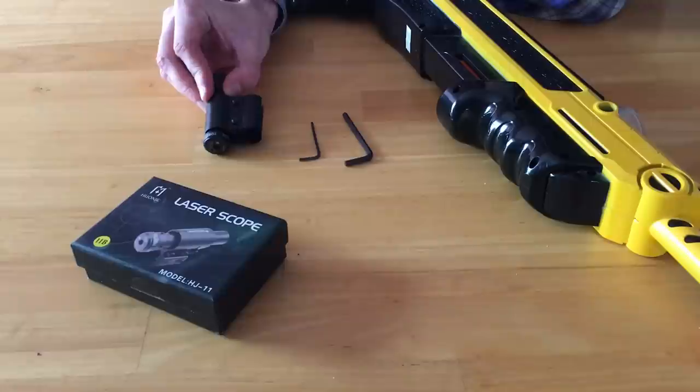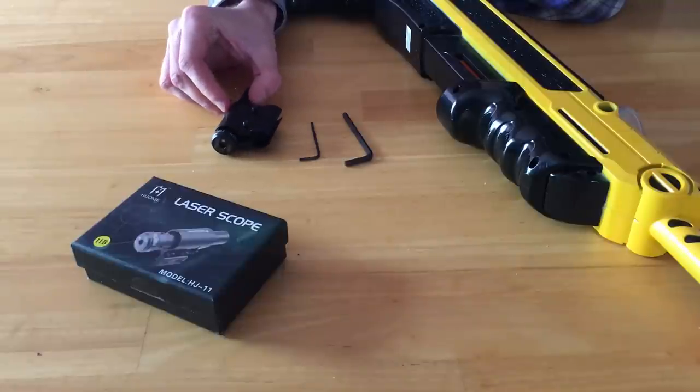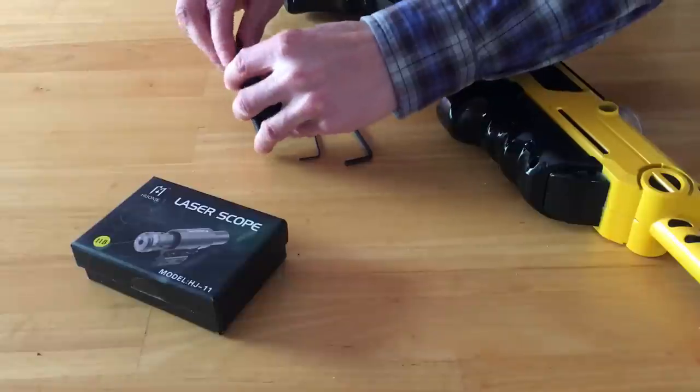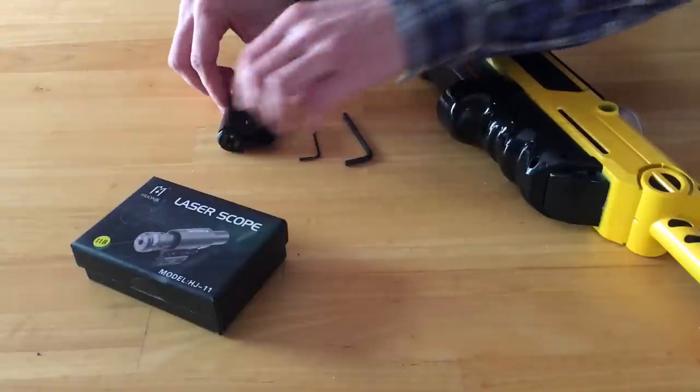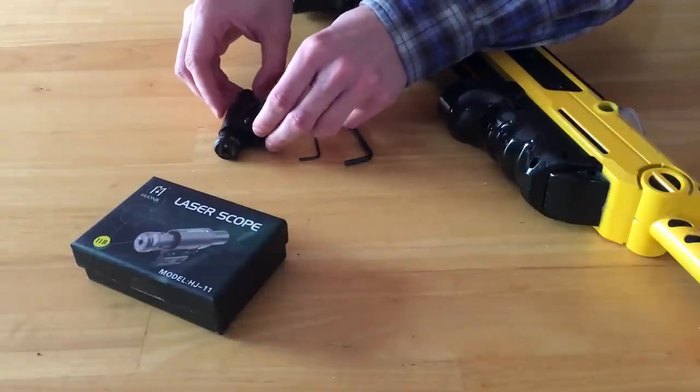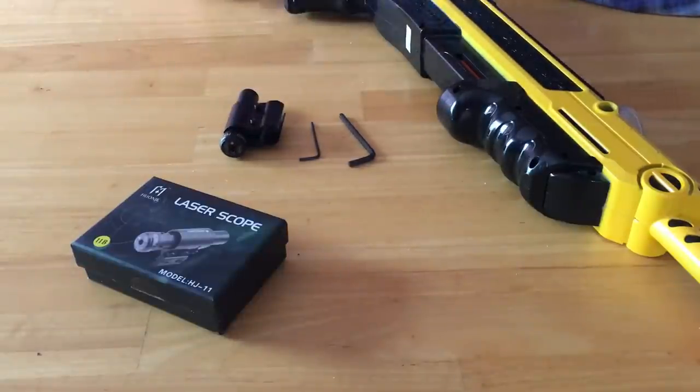In the box, you get four LR44 type watch batteries that power the laser sight. You just unscrew the back and put it in there. You get the bracket that you use to affix it to the barrel, and you get two Allen wrenches, which we'll get to in a minute.